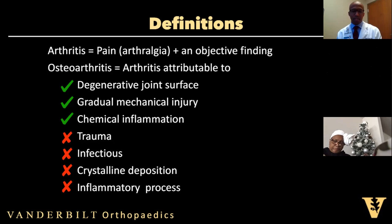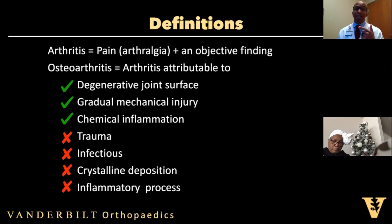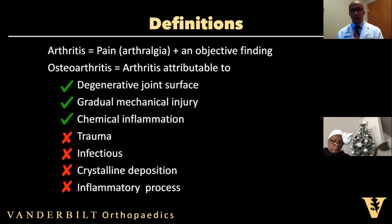Now, osteoarthritis is specifically different from arthritis directly related to acute trauma, which may more commonly be termed acute sprains and strains. Osteoarthritis is also not directly related to an active infectious process — that is a caustic arthritis. A crystalline deposit like gout and the associated white blood cells entering a joint space to remove those crystals can be an erosive arthritis. And the inflammatory processes seen in autoimmune disease are also erosive. Those are different types of primary arthritis, although osteoarthritis can be a secondary effect of those preceding insults to a joint.